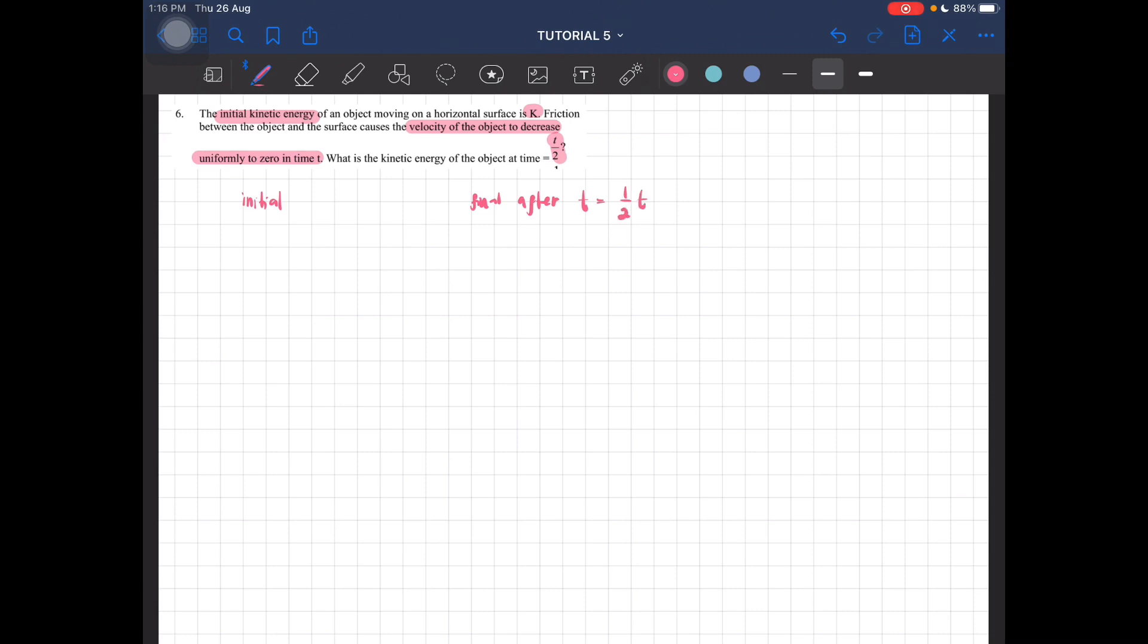So initially, the kinetic energy is just k, which is basically equal to half mu square. That is the formula for kinetic energy.